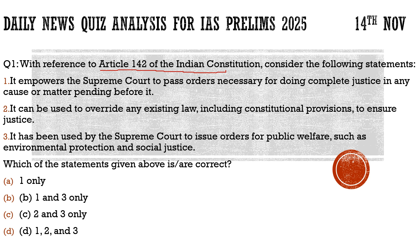The issue is associated with Uttar Pradesh and nearby states, where authorities would pick up prime suspects of communal violence and demolish their properties. The Supreme Court set brakes on this, stating there is no law permitting demolition of properties of the accused. The administration argued they only demolished illegally built properties, but the Supreme Court countered that if illegal construction is the reason, all such properties in that area should be demolished — not just targeting a specific person.